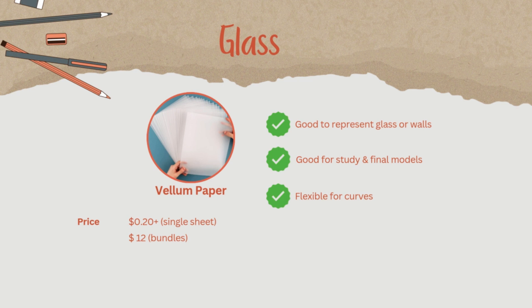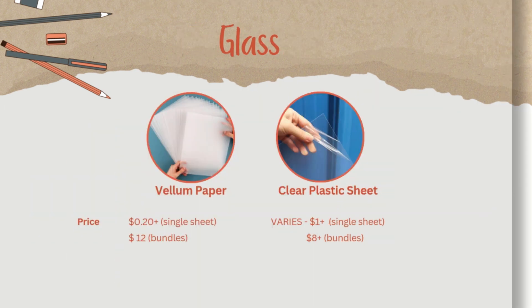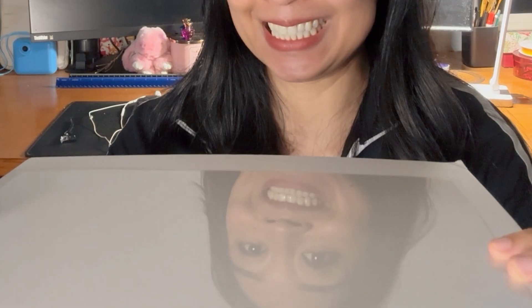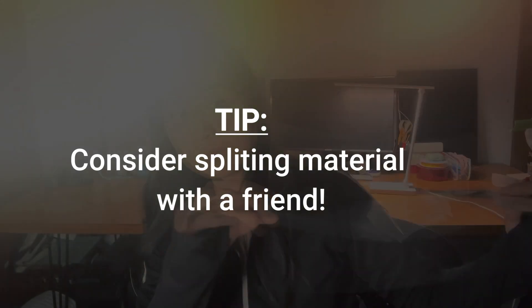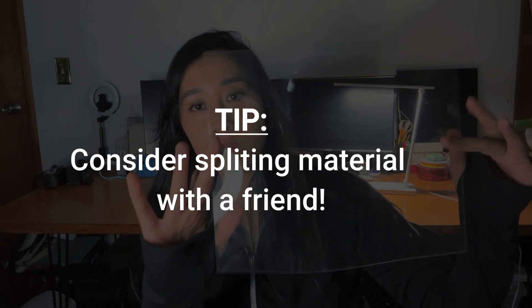For glass or transparent elements, you can use vellum — it costs as little as 20 cents per sheet, making it a flexible, affordable solution for acrylic. Number two: transparent sheets, another great option for glass or textured water features. It comes in multipacks, so consider splitting it with a friend if you don't need a full pack.